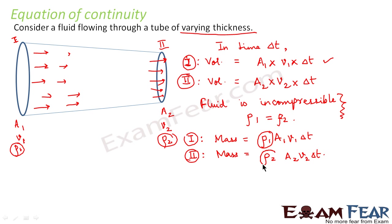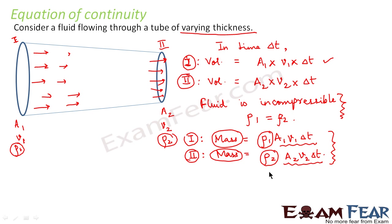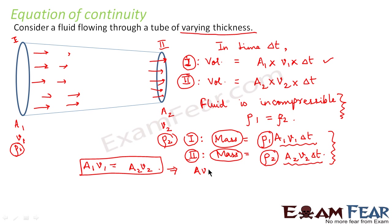From the incompressibility condition, rho1 equals rho2. We also see that A1 times V1 times delta T equals A2 times V2 times delta T, because this is the volume covered at each end. From conservation of mass, this mass has to be constant. Since rho1 equals rho2 and delta T cancels, we find that A1 times V1 equals A2 times V2. This is the equation of continuity, which states that area times velocity equals constant.